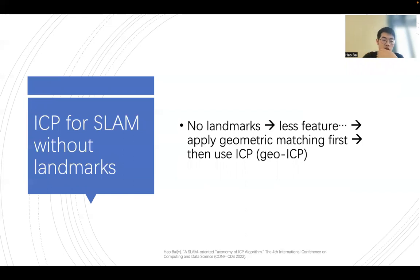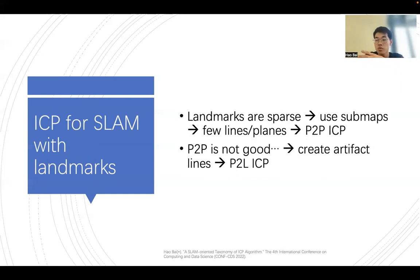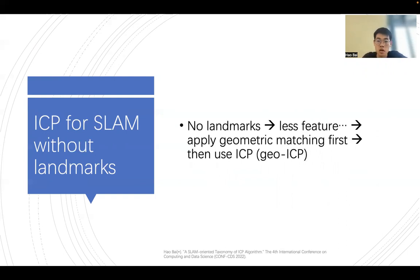Without landmarks, you don't need to worry as much about feature extraction since it's normal SLAM. However, compared to the landmark case, you still need good performance. Although you don't have landmarks, you want to achieve similar results. Scientists proposed applying geometric matching first and then using ICP, because ICP is more statistical — introducing geometric matching greatly reduces the difficulty of the registration.